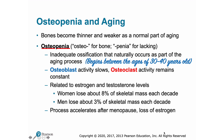Not all parts of the skeleton are equally affected. Epiphyses, vertebrae, and the jaws are most seriously affected, resulting in fragile limbs, a reduction in height, and the loss of teeth. Osteopenia can progress to osteoporosis, as described in the clinical note in our textbook.